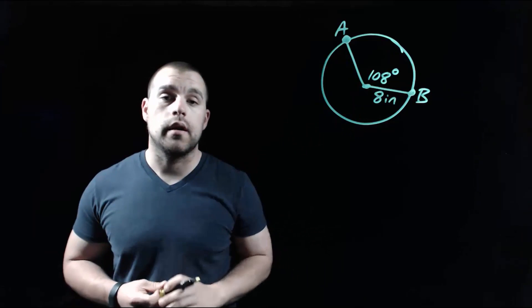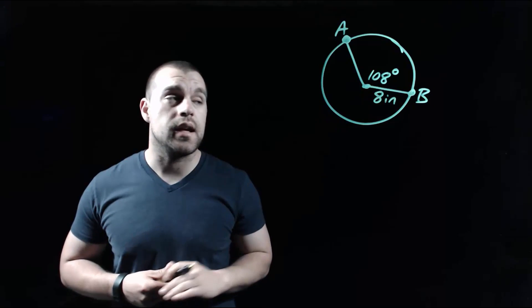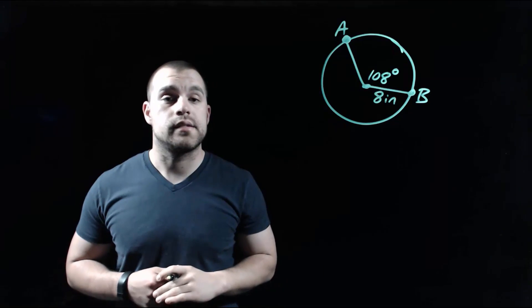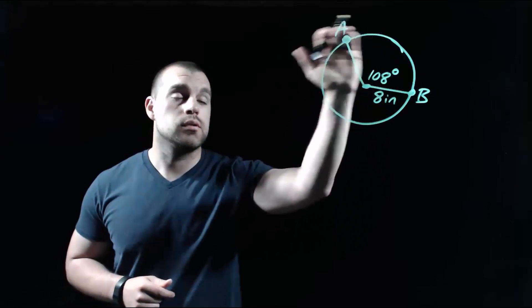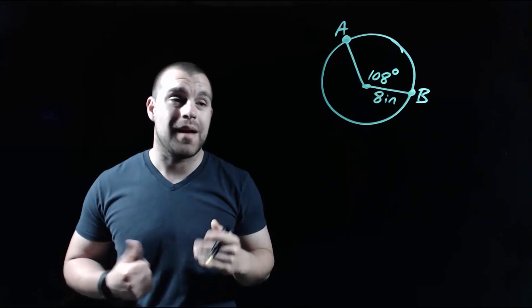In this example we're looking at a circle that has a radius of 8 inches. We're also given a central angle of 108 degrees, and what we want to try to do is find the arc length from A to B.